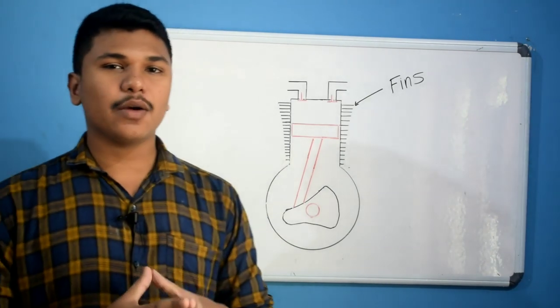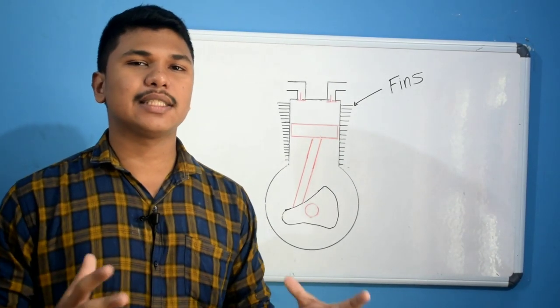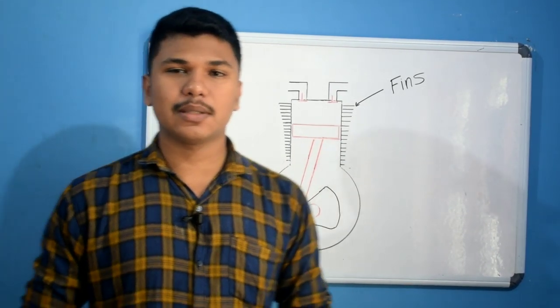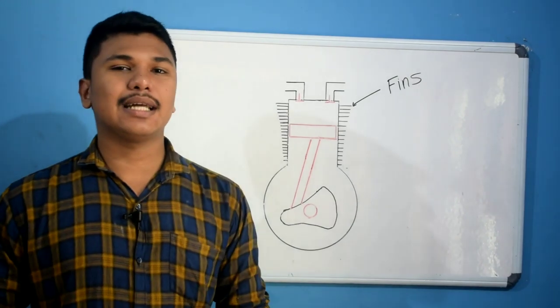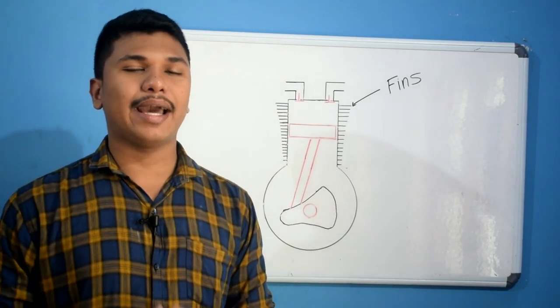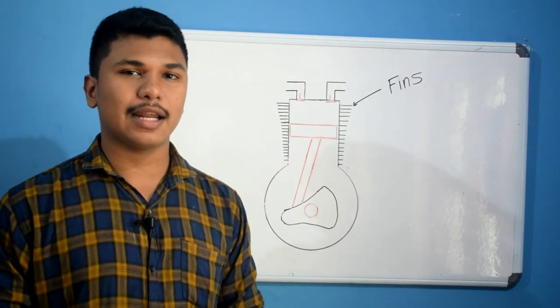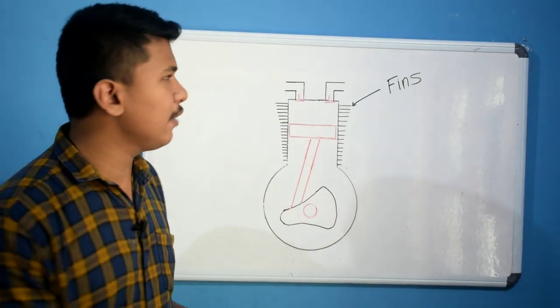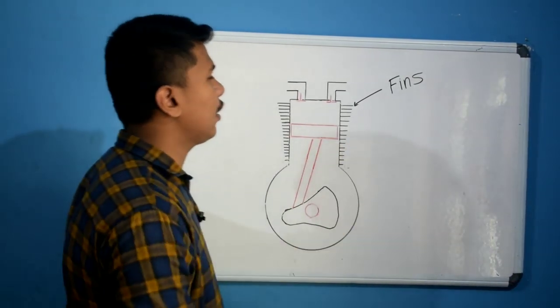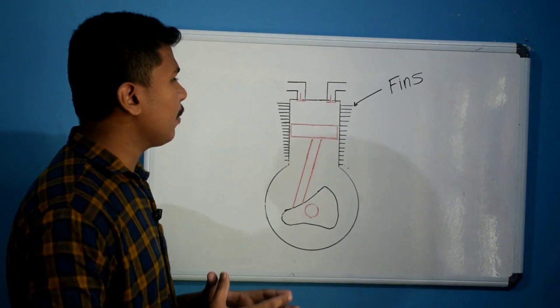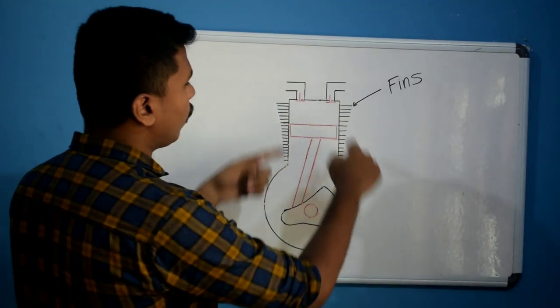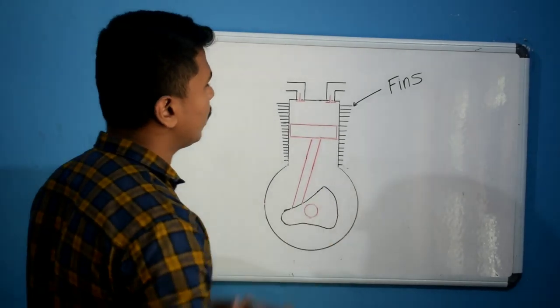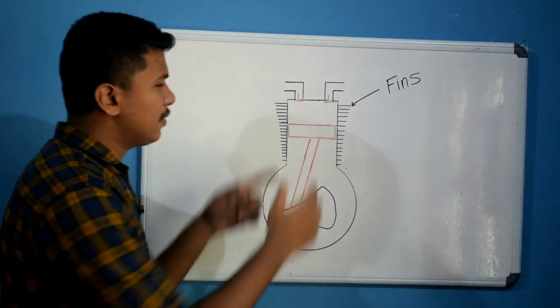The air cooling system is a very simple cooling system. You can use the air cooling system in engines up to around 200cc. It uses fins — cuttings on the cylinder block of a bike — to increase the surface area exposed to air.